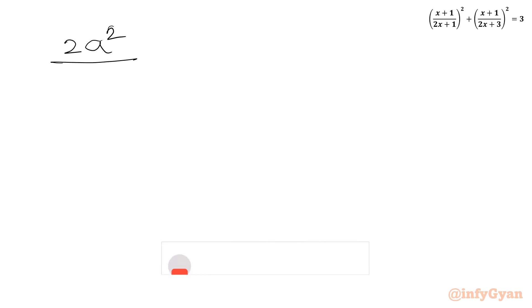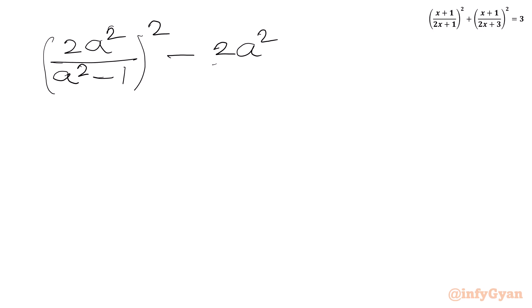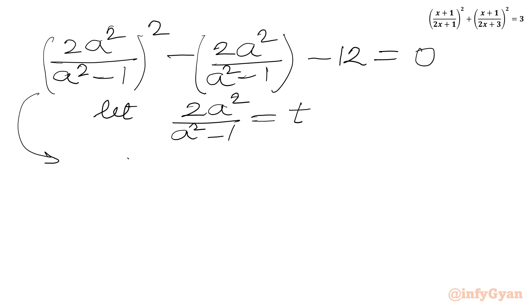So we write: (2a²/(a²−1))² − (2a²/(a²−1)) − 12 = 0. This is a quadratic equation in 2a²/(a²−1). So we let t = 2a²/(a²−1), giving us the quadratic t² − t − 12 = 0.